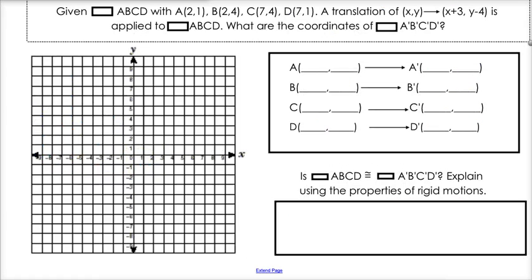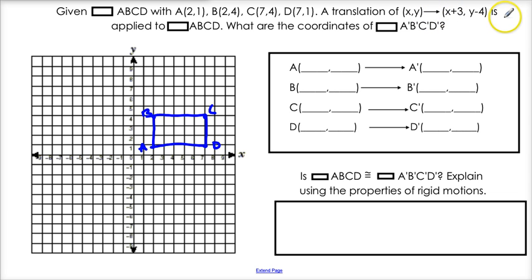Let's try one more example using a different notation. We're given rectangle ABCD with A at (2,1), B at (2,4), C at (7,4), and D at (7,1). A translation of (x, y) → (x+3, y−4) is applied to ABCD. What are the coordinates of A prime, B prime, C prime, D prime — our image after the translation?